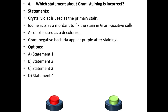Fourth question. Which statement about gram staining is incorrect? Statements: Crystal violet is used as the primary stain. Iodine acts as a mordant to fix the stain in gram-positive cells. Alcohol is used as a decolorizer. Gram-negative bacteria appear purple after staining.